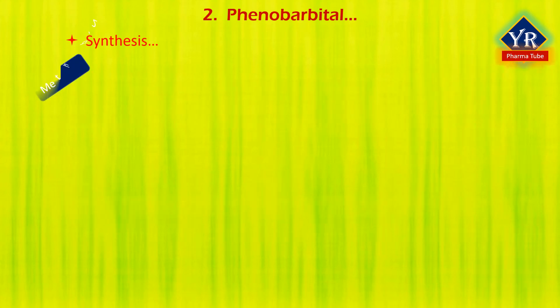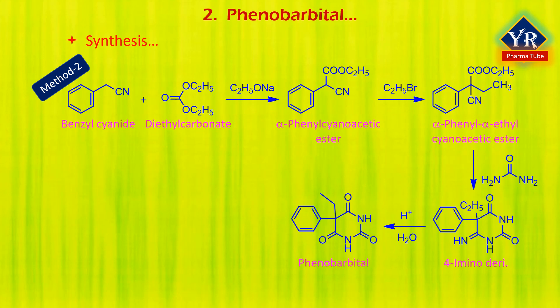The second synthetic approach utilizes diethyl carbonate in the presence of a strong base such as sodium ethoxide to give alpha-phenyl cyanoacetic ester. Alkylation of this ester using ethyl bromide proceeds via a nitrile anion intermediate to give alpha-phenyl-alpha-ethyl cyanoacetic ester. This product is then converted into the amino derivative upon condensation with urea, and finally acidic hydrolysis of the resulting product gives phenobarbital.